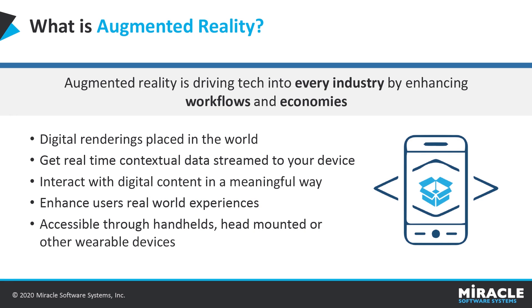So what is augmented reality? It is the overlay of information in the real world. It could actually be many different things — everything from geolocation, where you're taking your location data and plotting a course to your next destination, to reading barcodes and displaying information about the products you're looking at, or something more advanced where it actually does image processing on the fly.